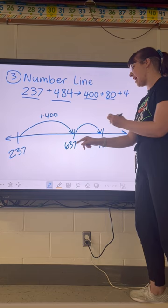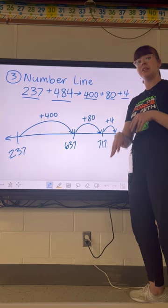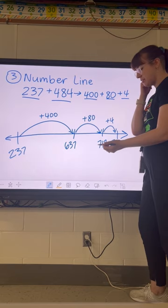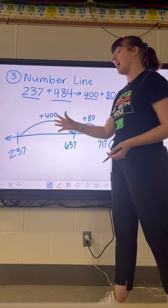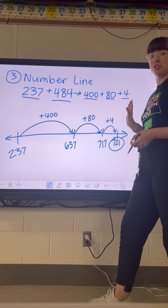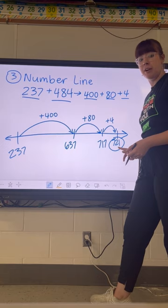Now we've added our hundreds and our tens. For the last step, we add our ones. Most students like to count on their fingers: 718, 719, 720, 721. So we land at 721. This method is really great if your student does this kind of mental math already — the number line is almost a visualization of that. It can be confusing because it starts at the hundreds and goes to the ones, but there's not really any regrouping involved. Students just need to add on fluently from whatever number they're at.